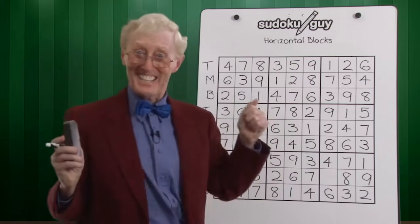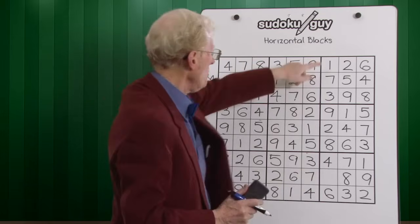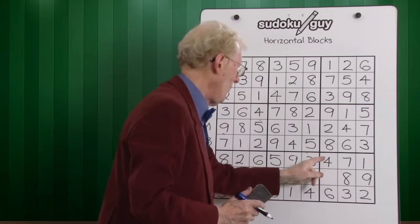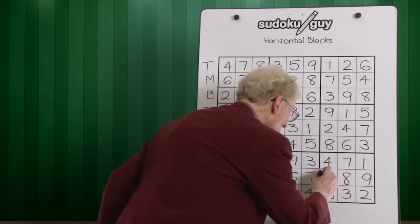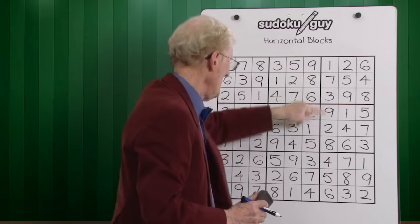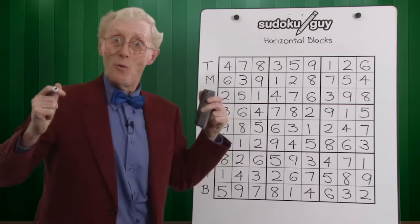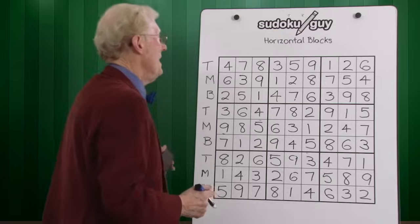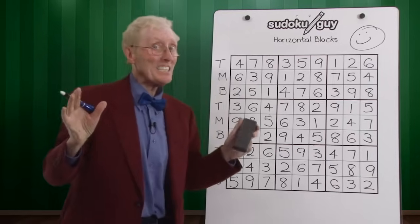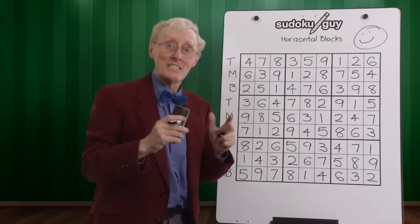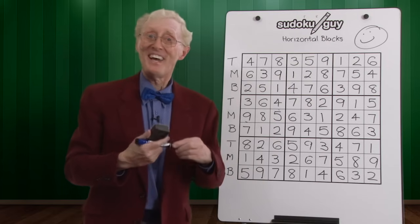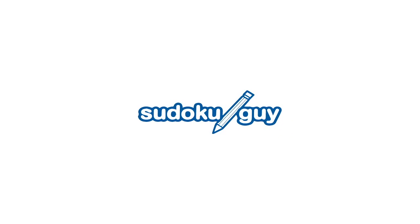We're almost there. Counting in the final block — one, two, three, four — we're missing a five. Let's double-check going one through eight down the column — no numbers repeated. We've completed our first, very easy puzzle! When we complete a puzzle, I like to give you a good smile. Next lesson we go a little further and cover other things. Each lesson has one step further, and each lesson has some homework if you want to practice. Bye for now.